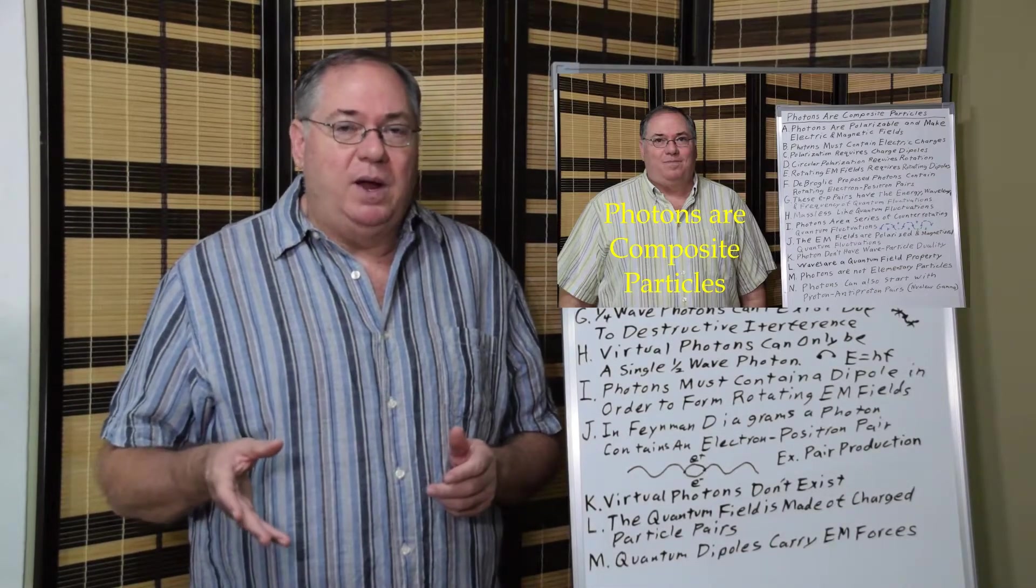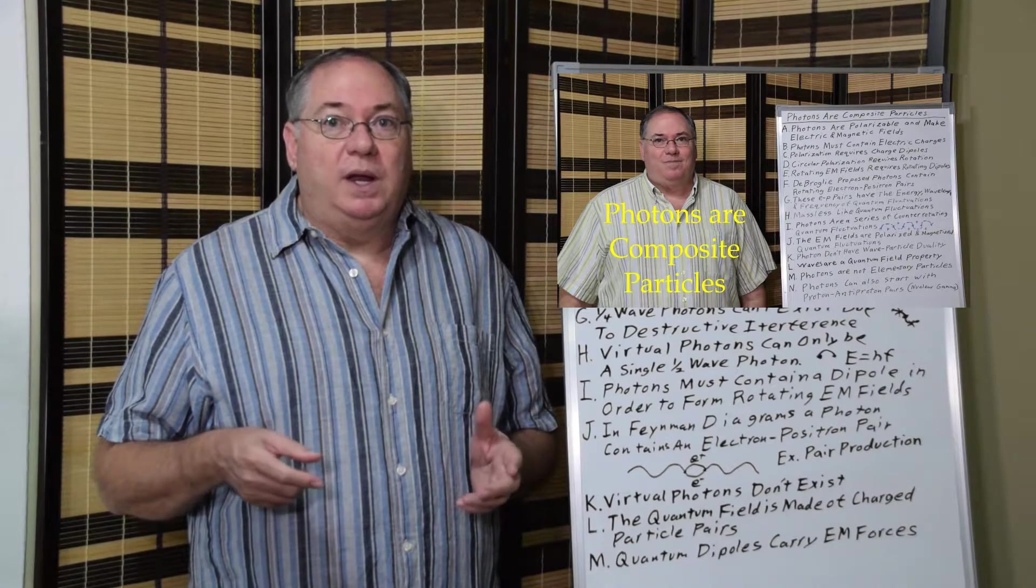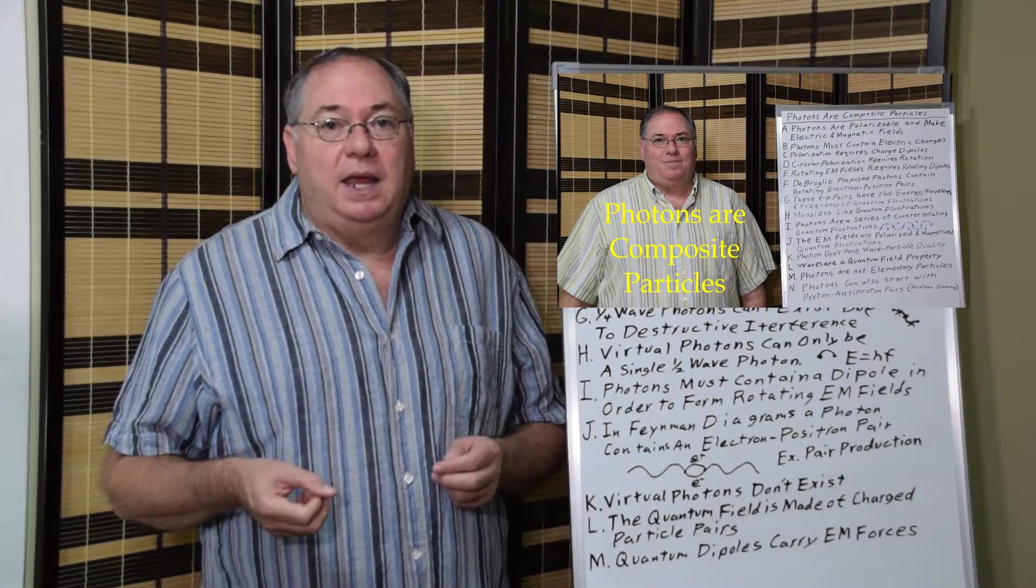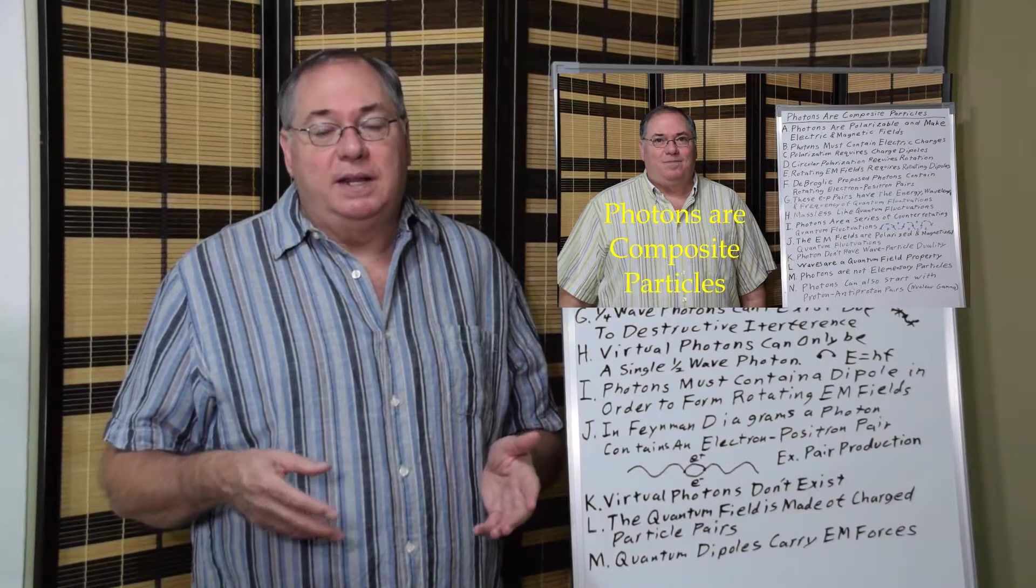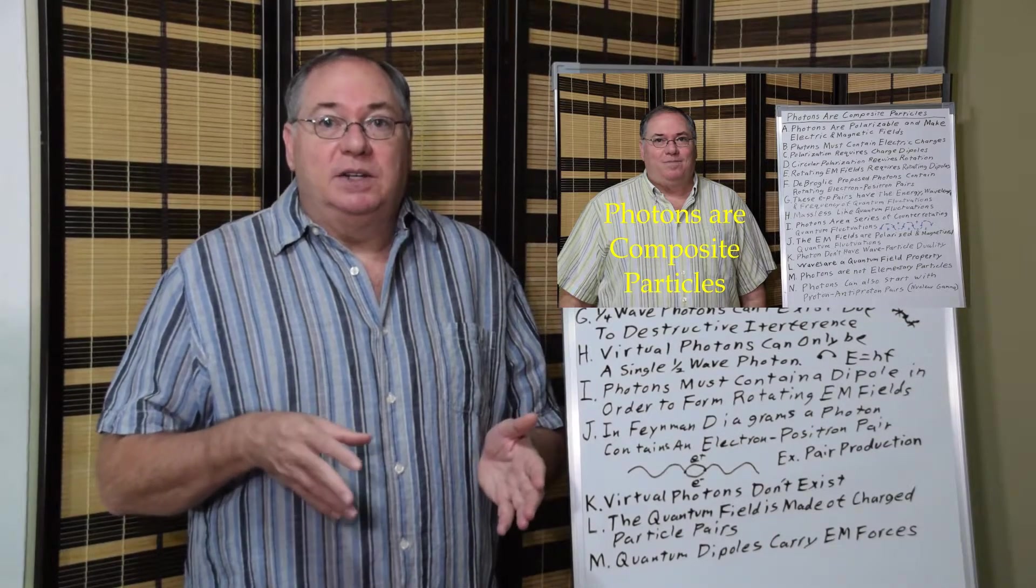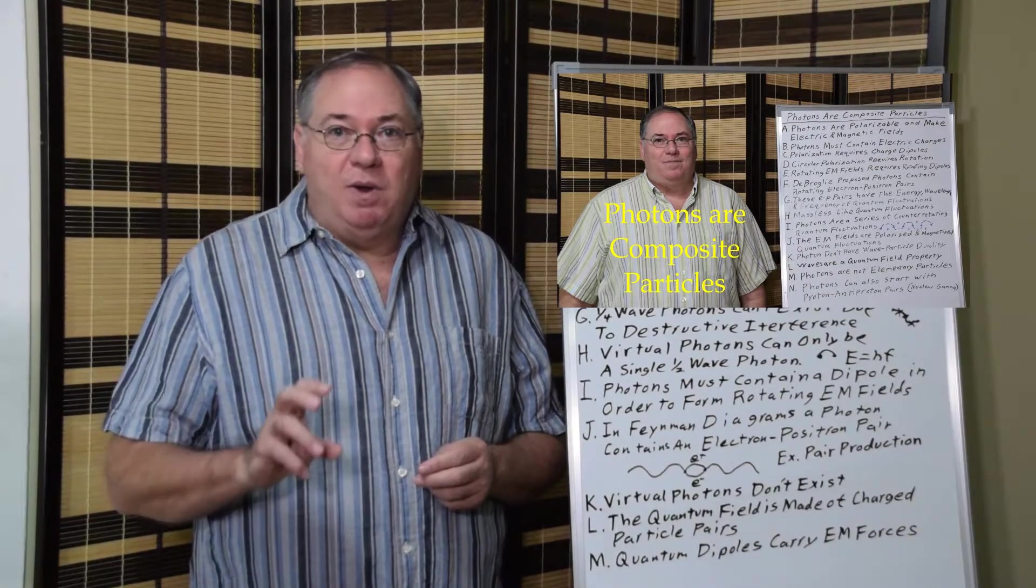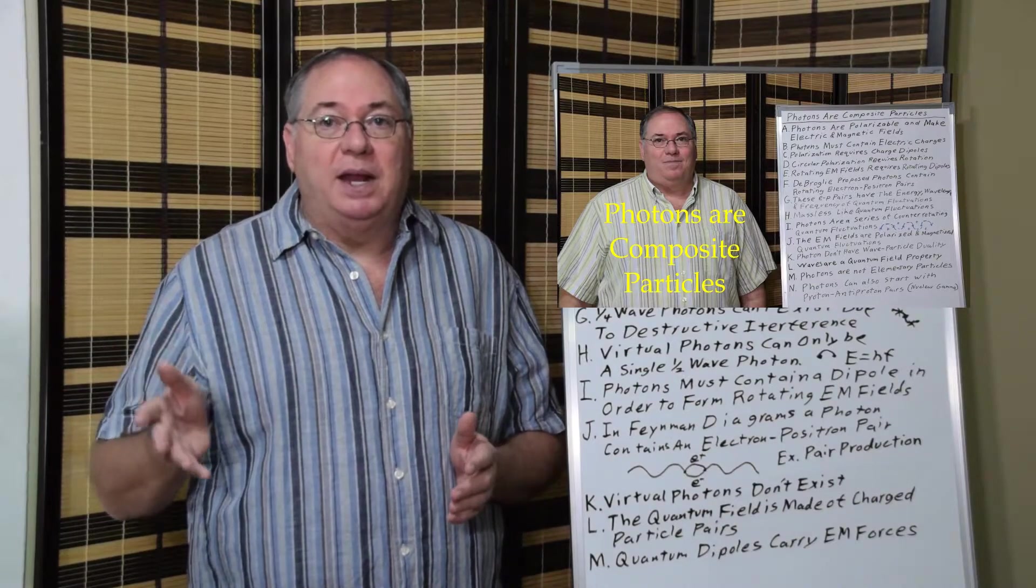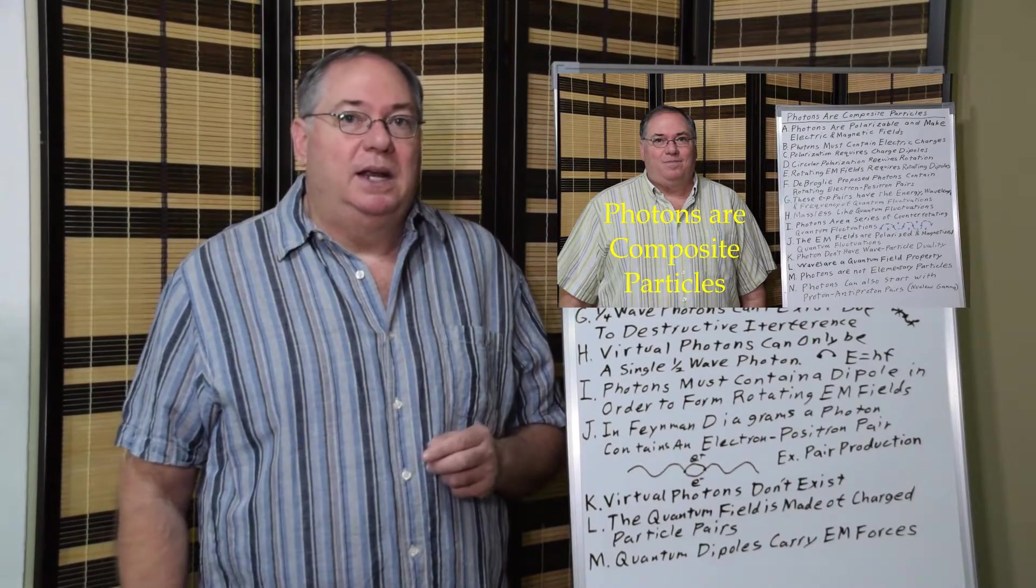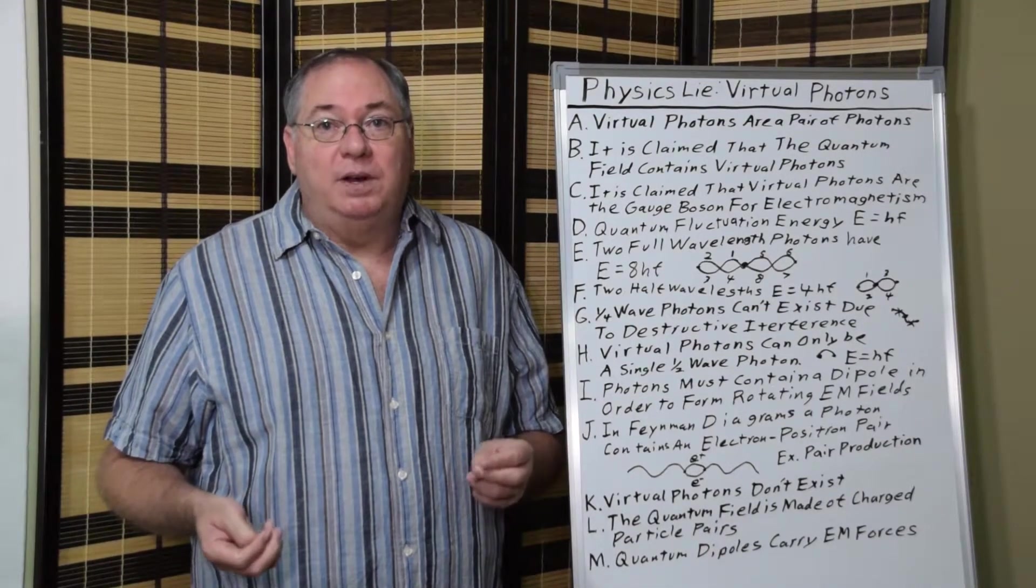I did a video on a composite model of photons that was initially proposed by de Broglie, where de Broglie thought that photons were electron-positron pairs. And according to my analysis of quantum field theory, de Broglie was correct. We can explain photons as a series of quantum electron-positron pairs, with each one quantum fluctuation. And as these quantum fluctuations rotate, they produce electric magnetic fields through the quantum field, as the quantum field is polarized and magnetized by the photon.